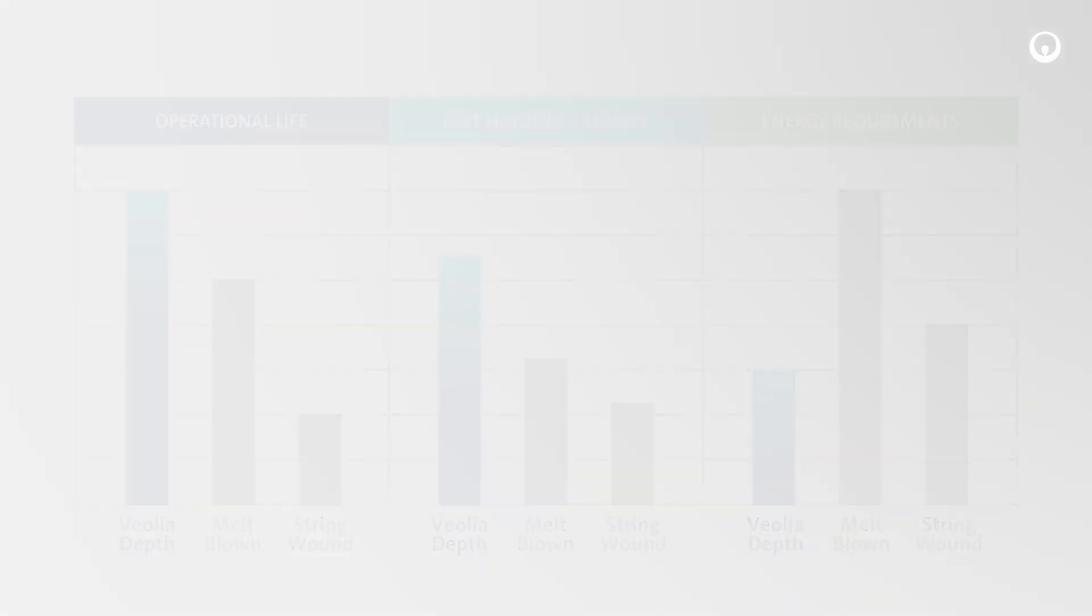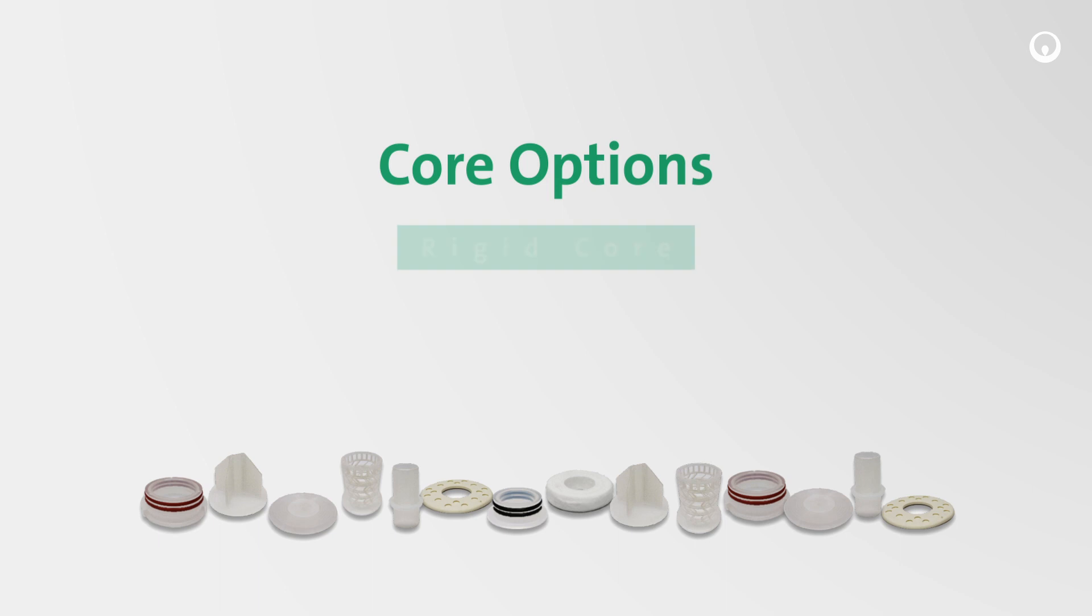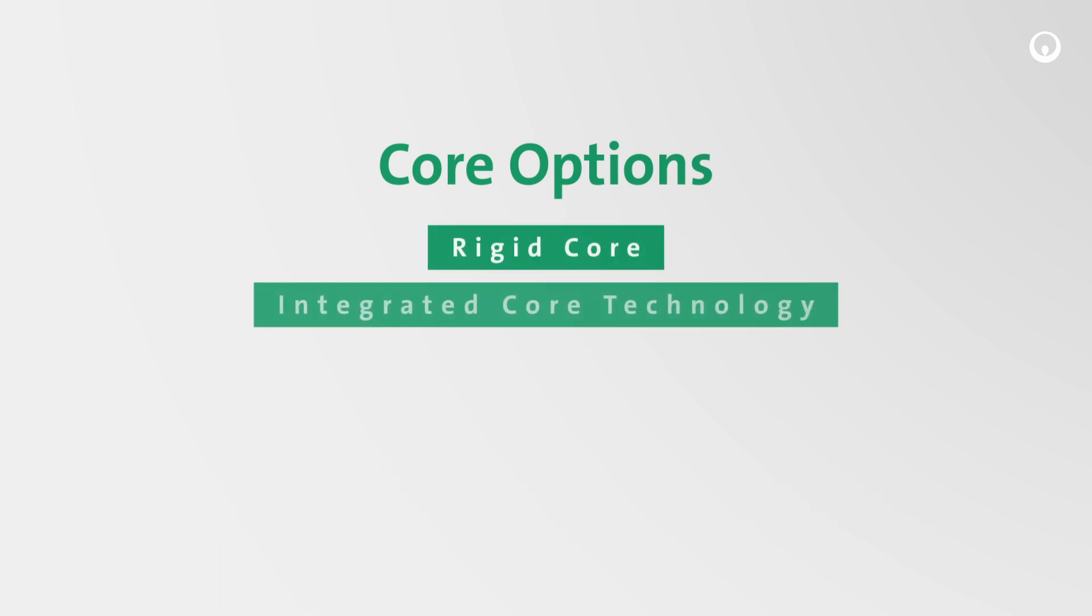Z-Plex filters come in multiple lengths in either two and a half inch or six and a half inch high flow diameters. They can have end adaptation and come with either rigid polypropylene cores, integrated cores, or melt blown cores.